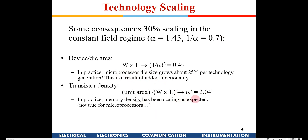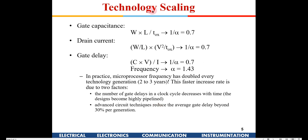Transistor density keeps increasing — these days a small pen drive can have a few terabytes of information stored, all because of scaling. For gate capacitance, Cox is proportional to area divided by tox. With scaling, area scales as 1/alpha squared and tox scales as 1/alpha, so the overall effect on capacitance is just 1/alpha — capacitance reduces by a factor of 0.7 per generation.